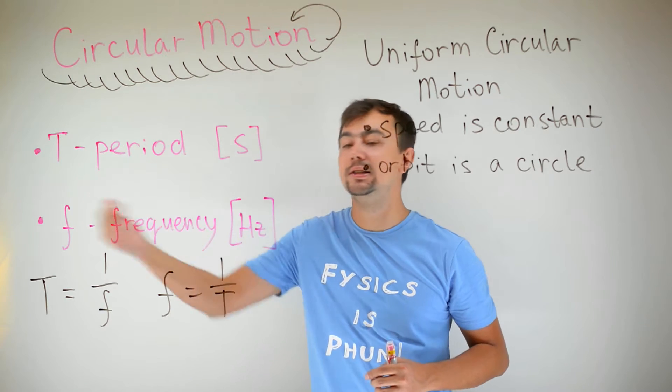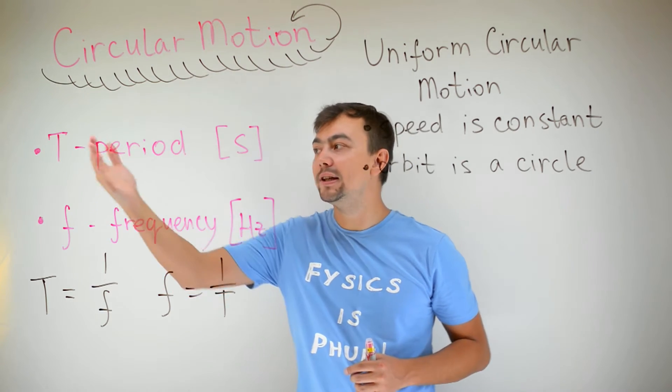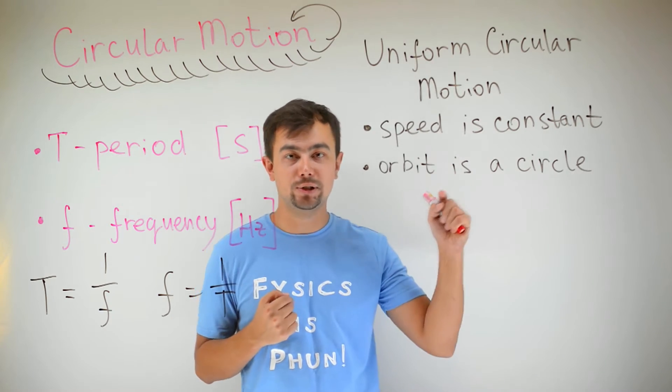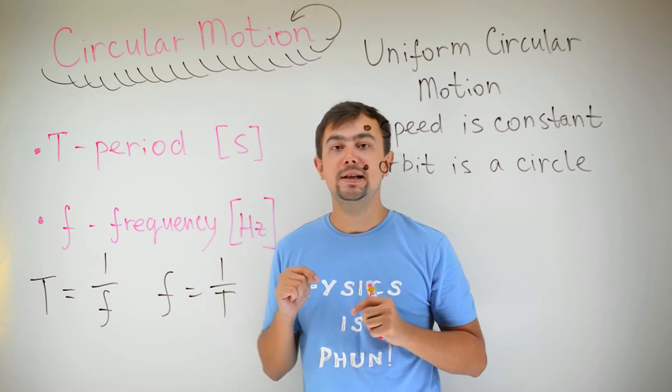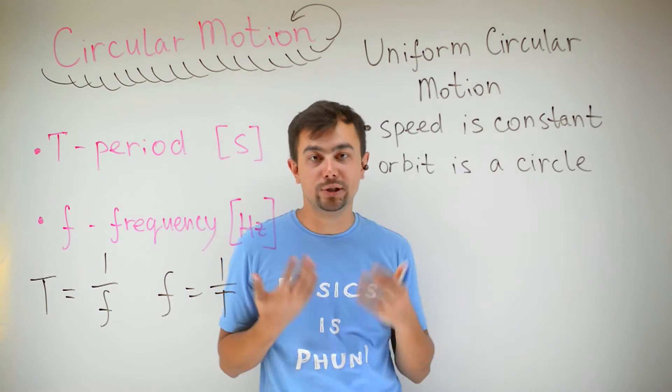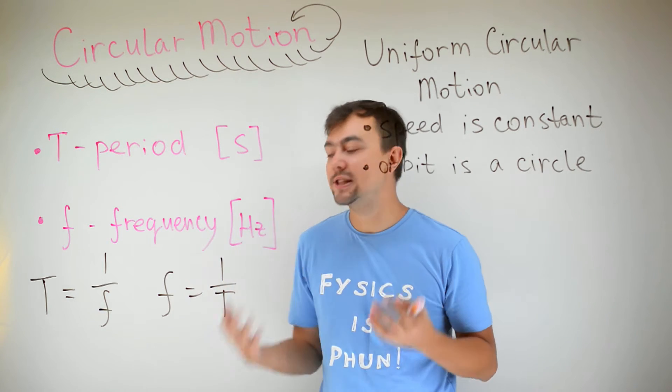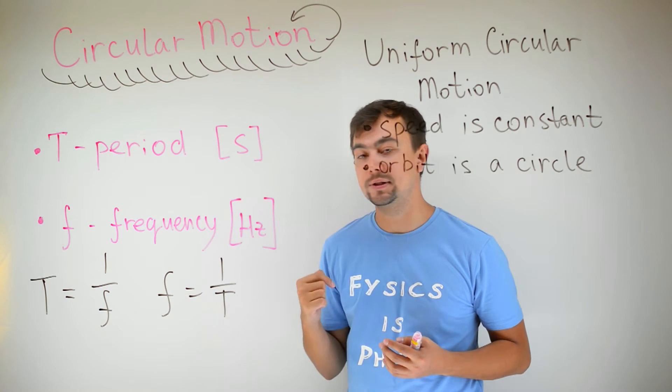Period is the number of seconds needed to do one complete revolution. And frequency is the number of revolutions per second. Period and frequency are reciprocals. So period is one over frequency, and frequency is one over period.